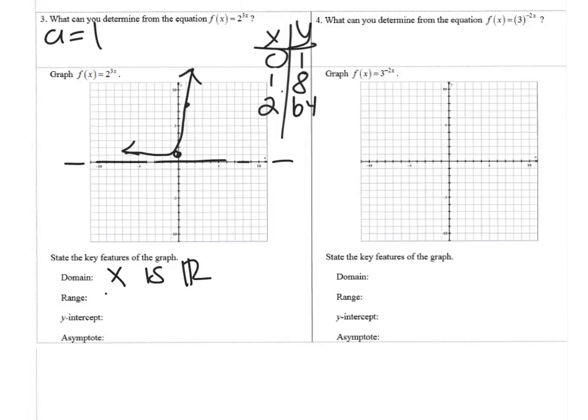Domain is all reals. Range is y is greater than 0. The x intercept was 1. And my asymptote is y equals 0. It is extremely important to write y equals for your asymptote. It's a line. If you do not write y equals for your asymptote, it will not be counted as correct.